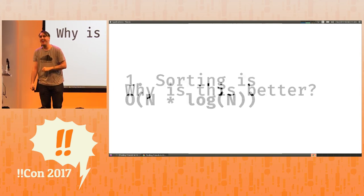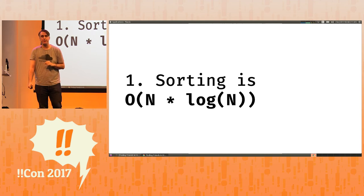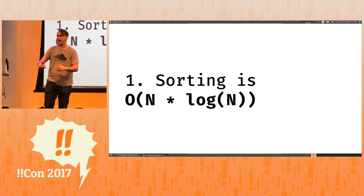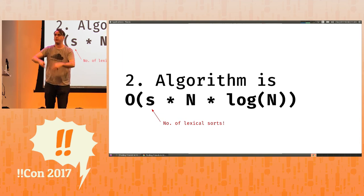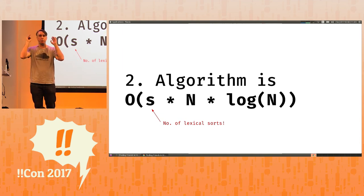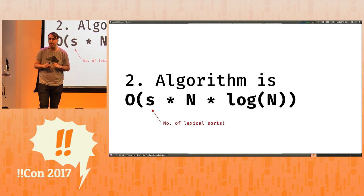Why is this better? Well, first of all, I told you our original algorithm was n squared, but sorting is n log n. And our algorithm, depending on the number of times we permute bits and lexically sort them, it's just s times n times log n, which is much faster than n squared when you have 130 million tracks.